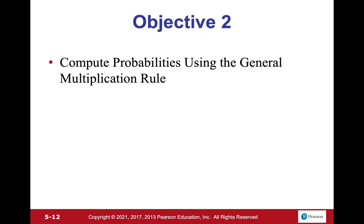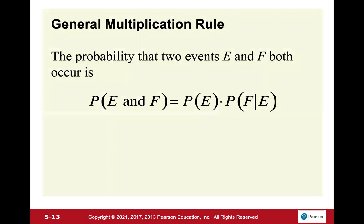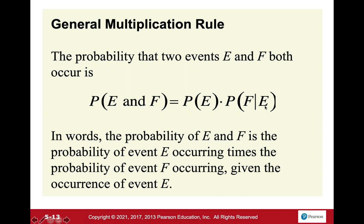Now let's compute probabilities using the general multiplication rule. The rule states: the probability that two events E and F both occur equals the probability of E times the probability of F given E. This applies to dependent events. If the events were independent, this would simply be the probability of E times the probability of F, without the conditional.